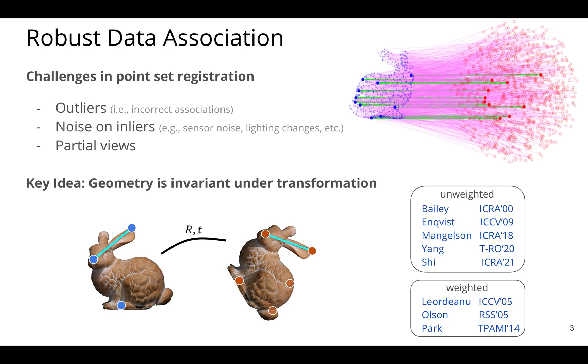So the key idea that we'll leverage then is that internal geometry or pairwise geometry between points inside of a single point cloud doesn't change under rigid body transformation. This idea is relatively simple and has been used in lots of different works. Shown here are a list of the most relevant to this work. I've separated them into weighted and unweighted categories.